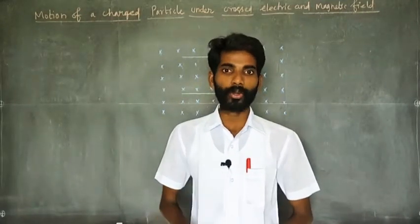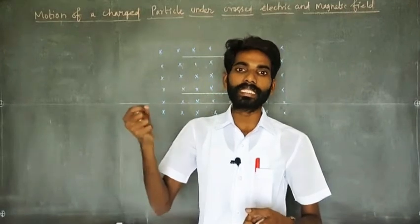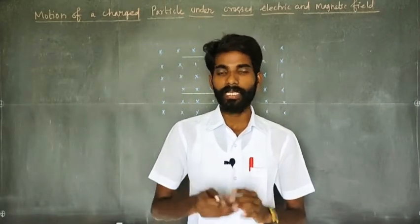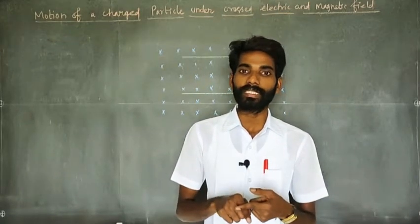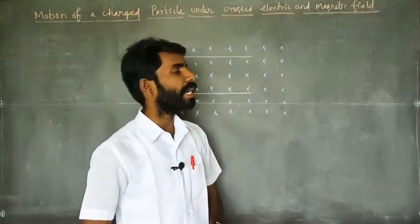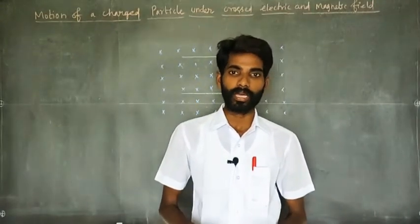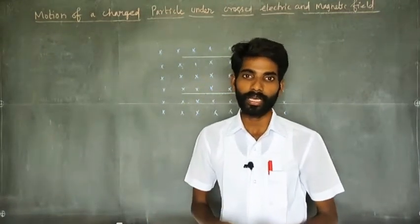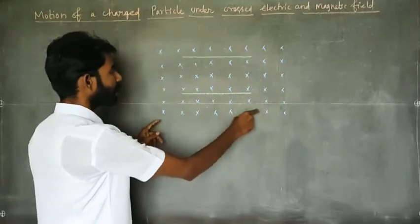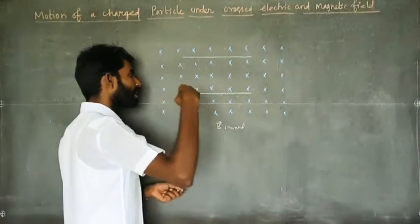Hello guys, what are we going to talk about today? A moving charged particle in electric and magnetic fields — two fields that are perpendicular to each other. We will talk about how that moving charged particle experiences force, and the path of the charged particle. Here we are talking about electric and magnetic fields being perpendicular. This arrangement is called a velocity selector. Two fields — electric and magnetic — perpendicular, with the magnetic field in the inverted direction.